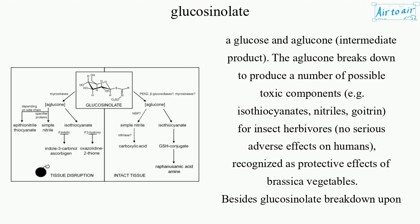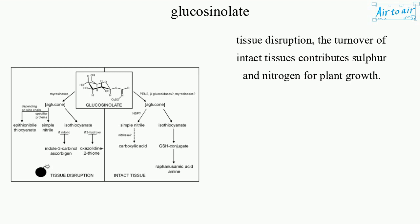Besides glucosinolate breakdown upon tissue disruption, the turnover of intact tissues contributes sulfur and nitrogen for plant growth.